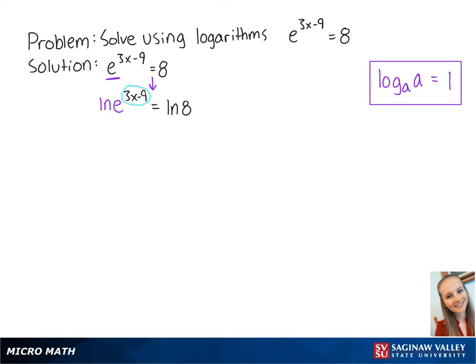To bring the exponent down, we're going to use this next property to get us 3x minus 9 times the ln of e equals the ln of 8. Since the ln of e is equal to 1, we now have 3x minus 9 equals the ln of 8.